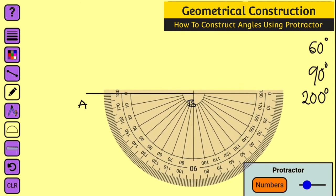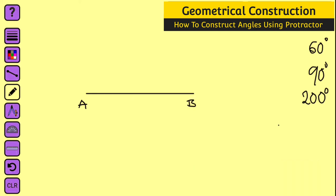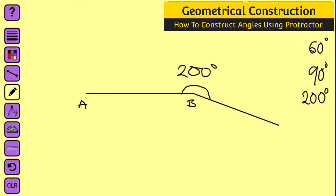So what we are going to do here is flip our protractor upside down to add 20 extra degrees. Now we are going to count clockwise 20 degrees. This is 20 — I will place a dot there. Take away your protractor and use your ruler to connect the dot and point B.